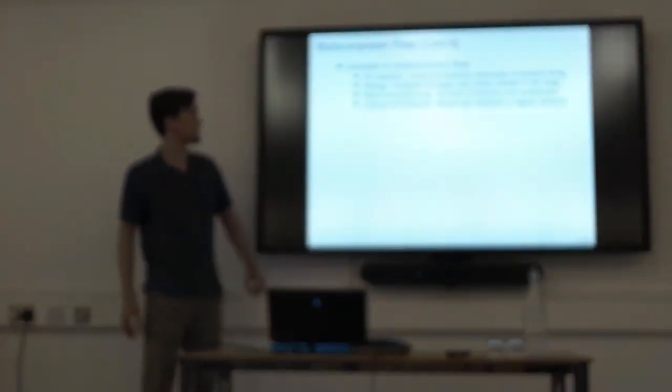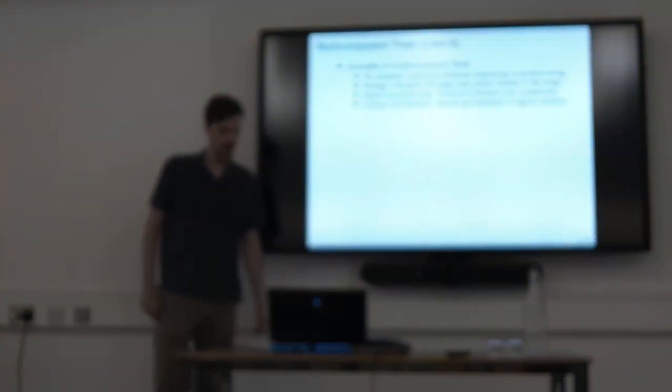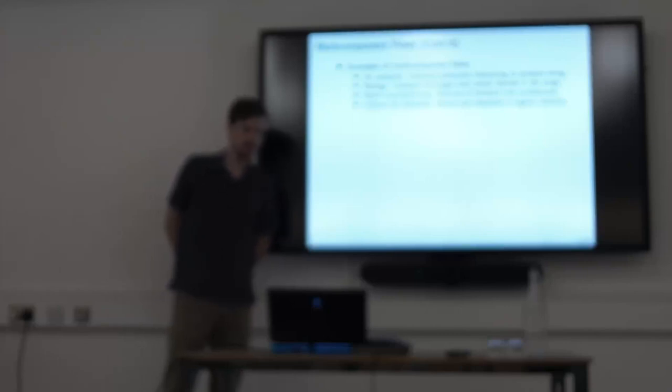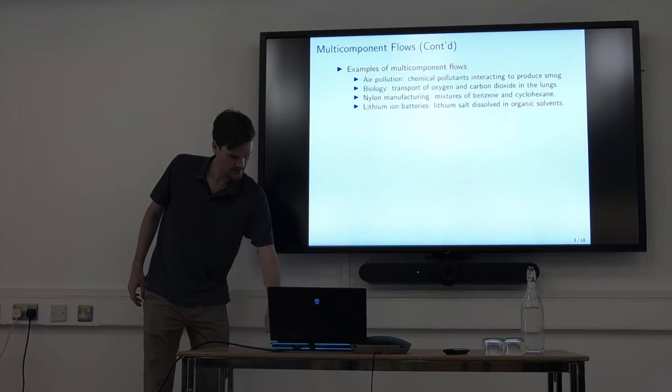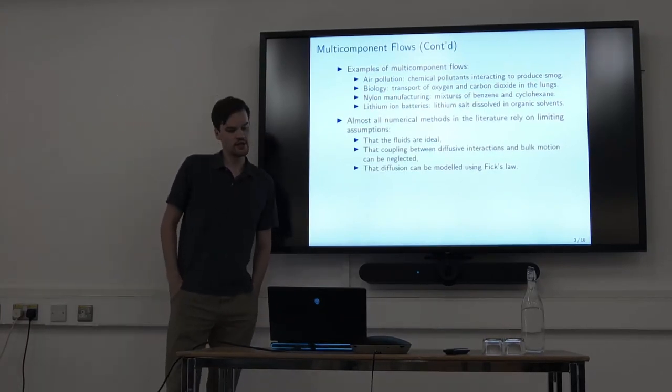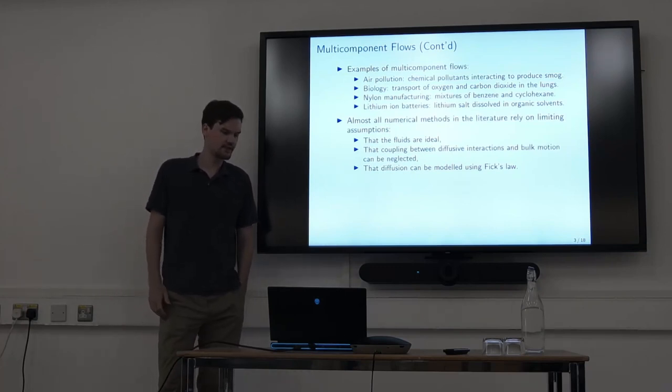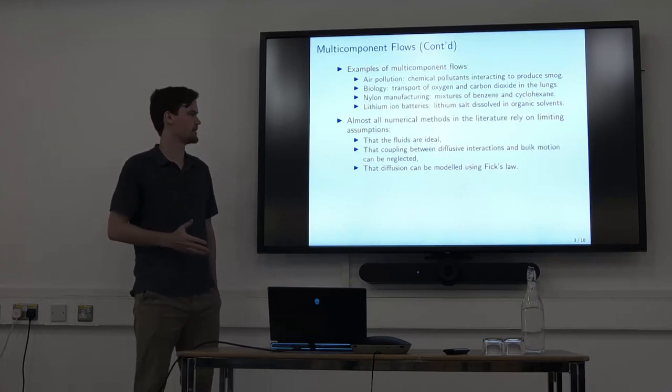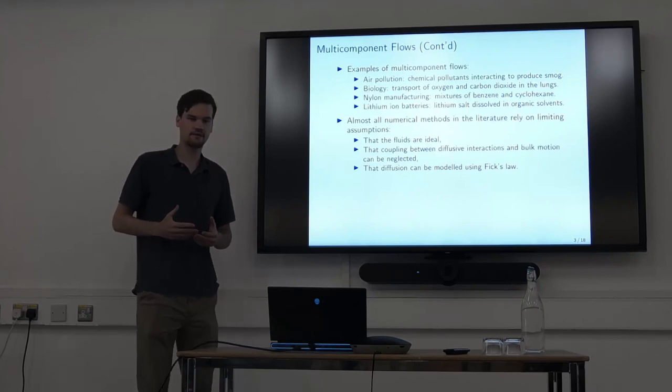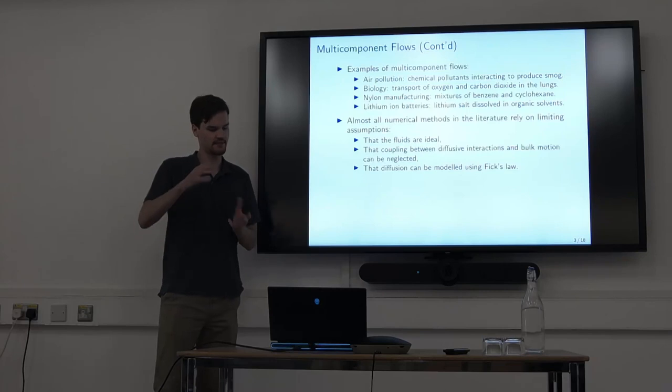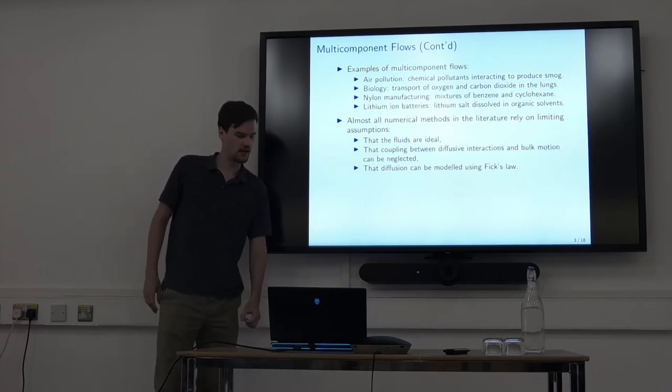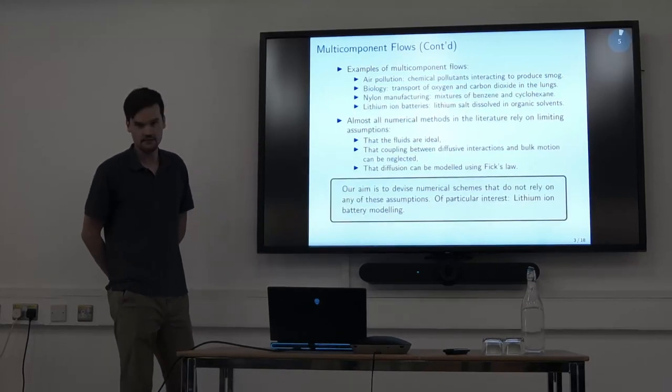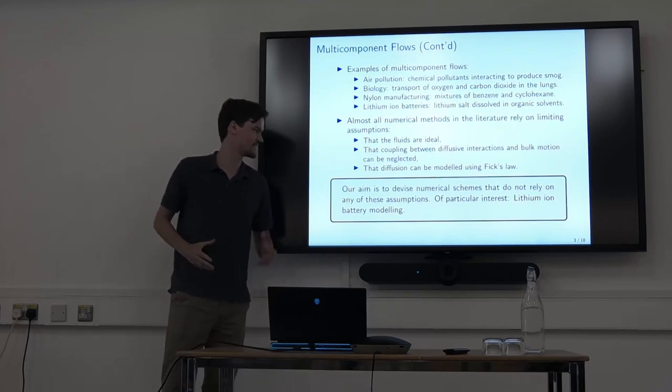To give some further examples, in biology, you have transport of oxygen and carbon dioxide in the lungs. In nylon manufacturing, mixtures of benzene and cyclohexane are very relevant. What we're very interested in is lithium ion battery modeling. There you have lithium salt dissolved in organic solvents, and those would be your different chemical species. The trouble is that almost all the numerical methods in the literature on multi-component flows rely on some limiting assumptions. They might assume the fluids are ideal, that the coupling between the diffusive physics and the bulk convective behavior can be decoupled, or that diffusion can be modeled using Fick's law. Our aim is to devise numerical schemes that don't rely on any of these assumptions, and we're particularly interested in using this for lithium ion battery modeling.